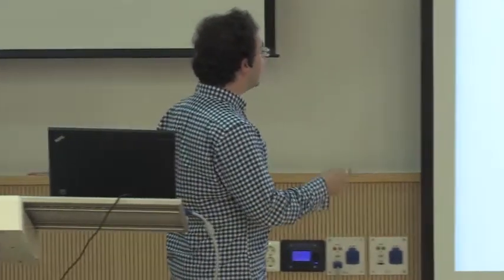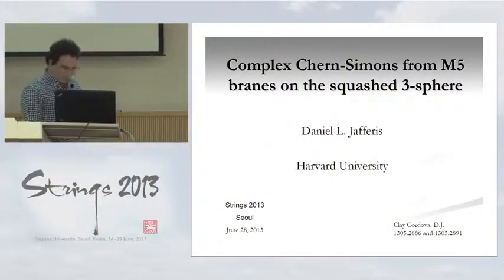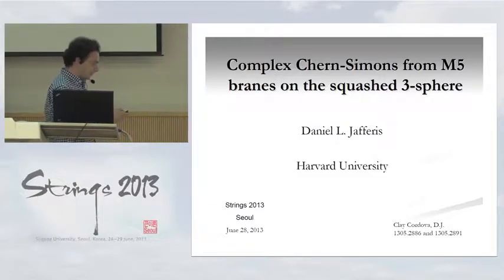Thank you so much for inviting me here to speak at this wonderful conference. Today I'm going to talk about how one can obtain complex Chern-Simons by reducing M5 branes on the squashed 3-sphere. This is related to the 3D-3D correspondence, and this is work with Clay Cordova, a post-doc at Harvard.